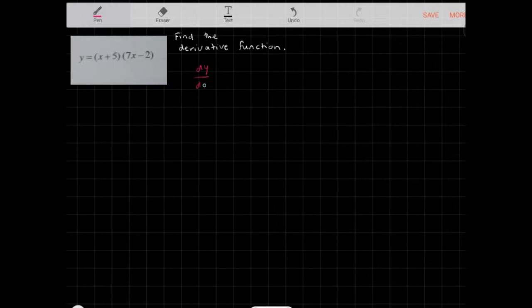So if we're using product rule, the derivative function dy/dx is equal to the derivative of the left hand factor, so derivative of (x + 5) times (7x - 2), plus the derivative of the right hand factor (7x - 2) times (x + 5).